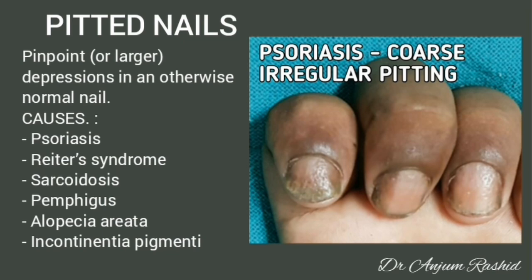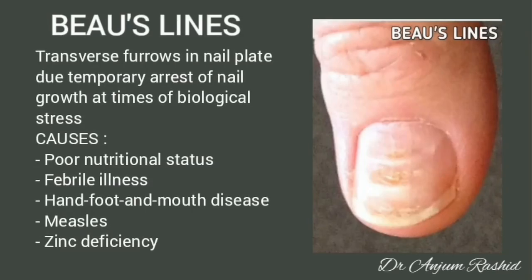Beau's lines: these are transverse furrows in the nail plate due to temporary arrest of nail growth at the time of biological stress. Causes include poor nutritional status, febrile illness, hand foot and mouth disease, measles, and zinc deficiency.